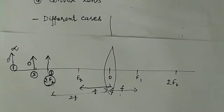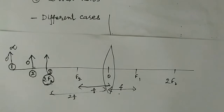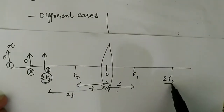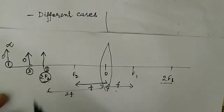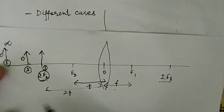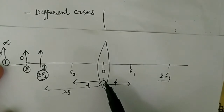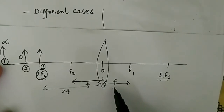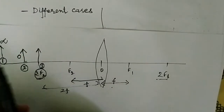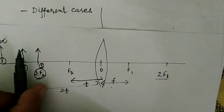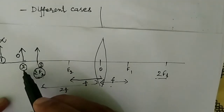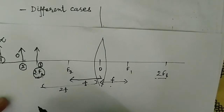Now let us discuss the different cases where we can keep our object in front of a convex lens. The first case is when your object is very far away from the convex lens, or the distance of the object is large compared to the focal length. The second case is when the object is brought a little closer but is still away from 2F2.